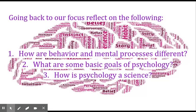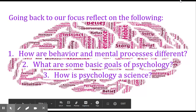Going back to our focus and reflection: behavior and mental processes are different because behavior can be measured, whereas mental processes can't — they're in the eye of the beholder. The goals of psychology are to better understand humans and human behavior and mental processes in order to help people achieve their goals and reduce human suffering. Psychology is a science because it deals with understanding people and their interactions with others as well as their mental processes. Thank you guys so much for listening to lesson one. I look forward to conducting lesson two with you.